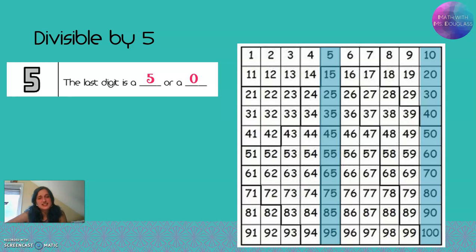Fives are nice and easy. For my multiples of five, you can notice that they either end in a five or they end in a zero. That's how you know you can divide something by five with no remainder.